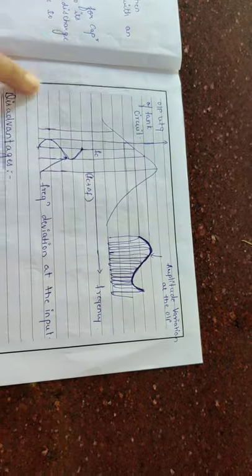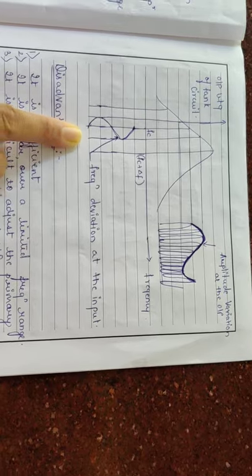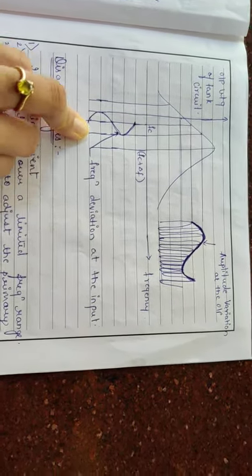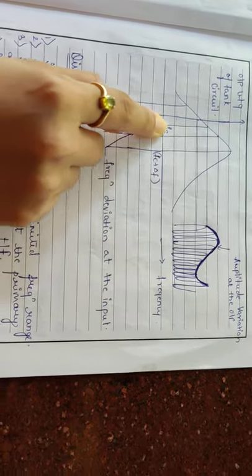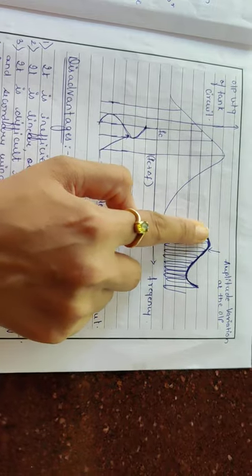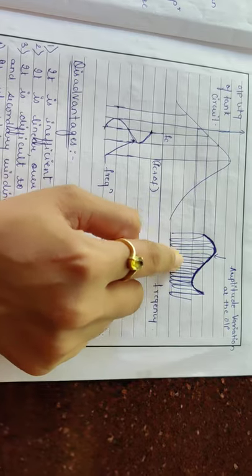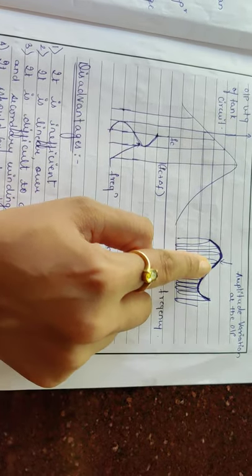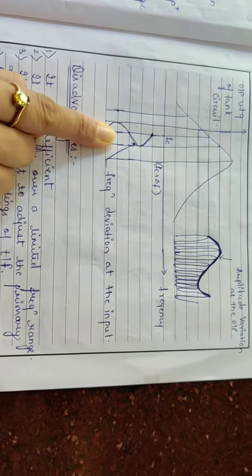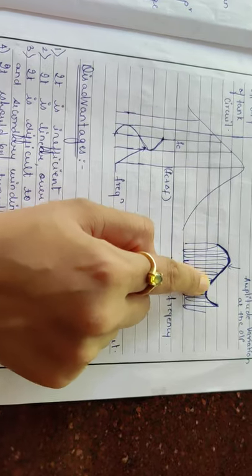This shows the characteristics of the simple diode detector. The frequency deviation is applied at the input, and at the output we get amplitude variations. Even though frequency deviation is applied at the input, the output is obtained in the form of amplitude variations.